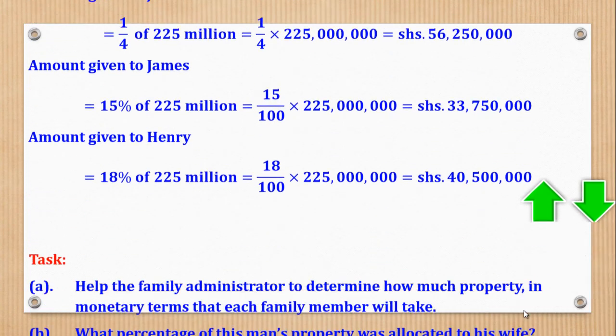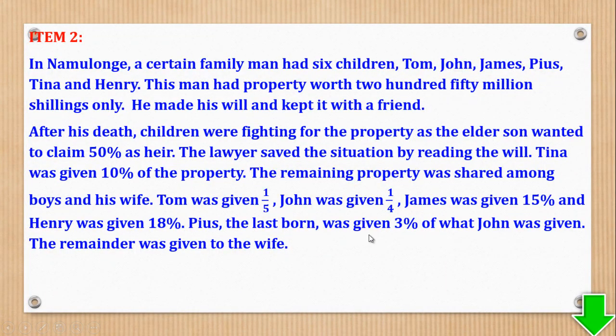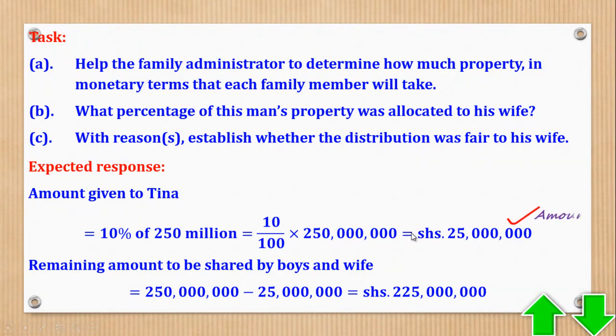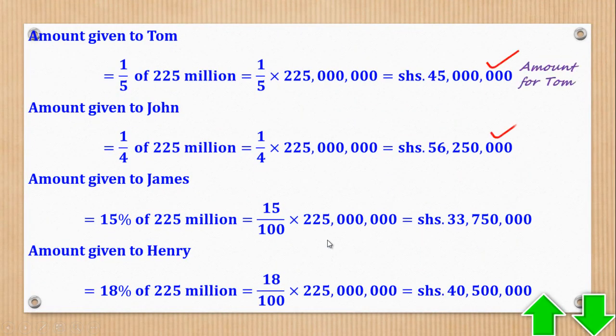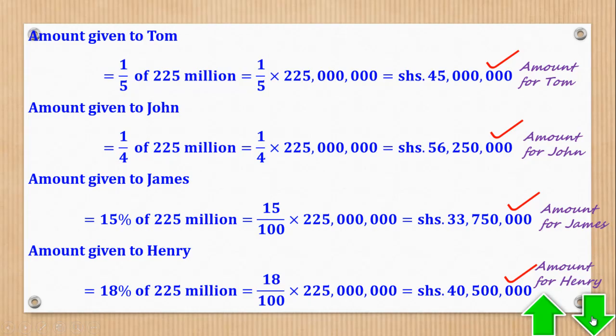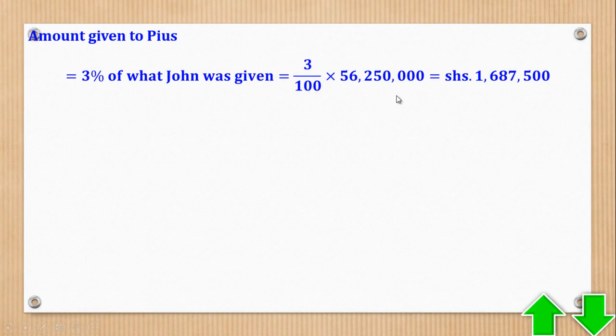From Henry, we go to Pius, the last born, who was given 3% of what John was given. So 3% of this is what the last born got. Amount given to Pius would be 3% of what John was given, which is 3 over 100 times 56 million 250 thousand shillings, to give you 1 million 687 thousand 500.